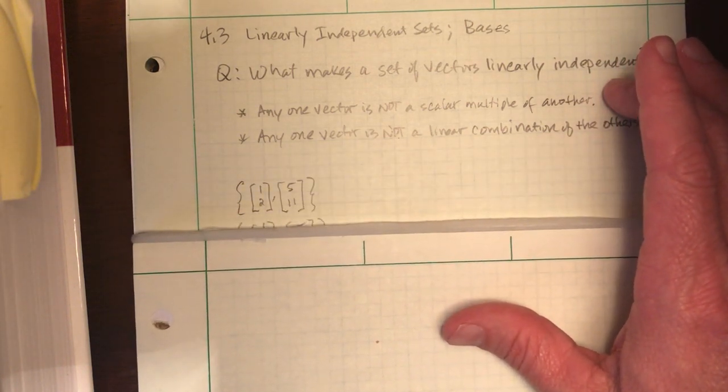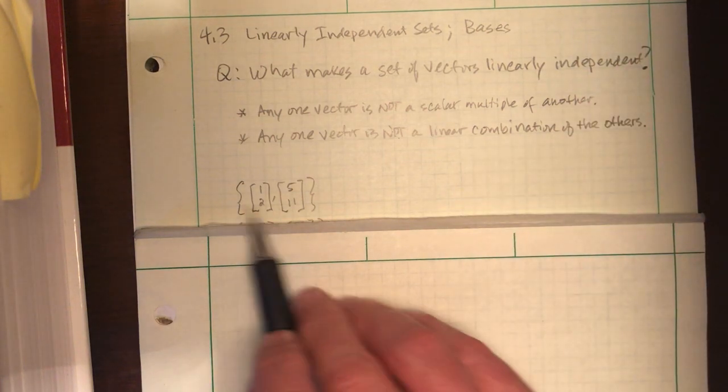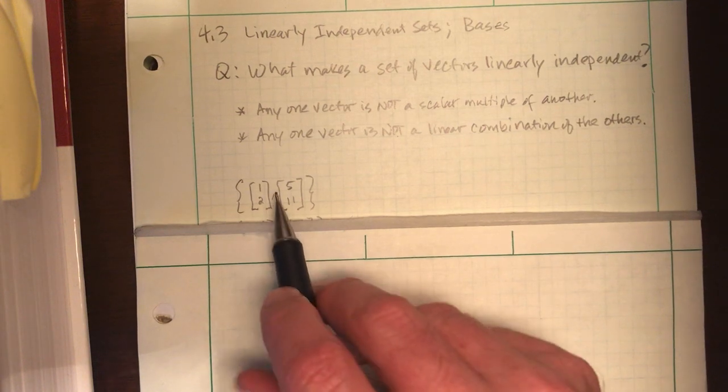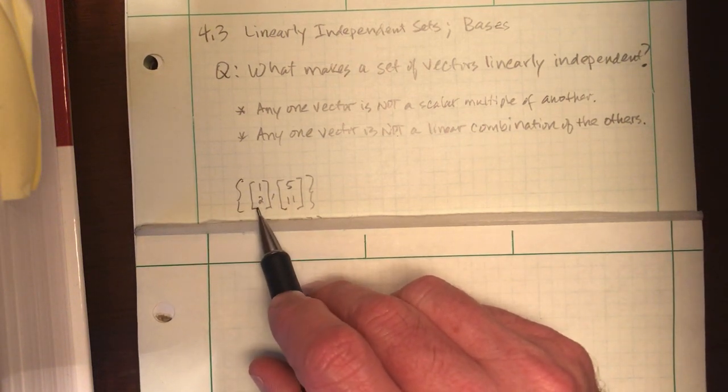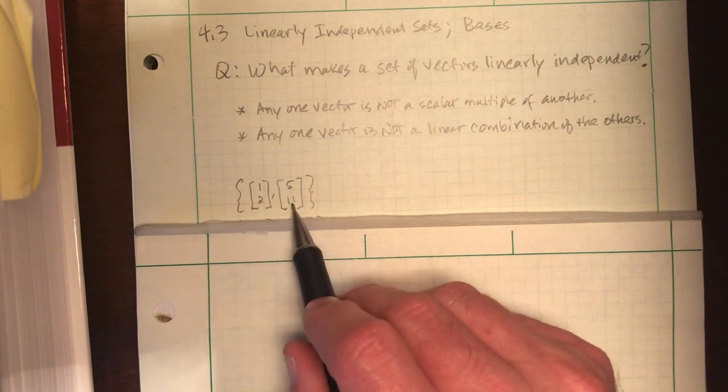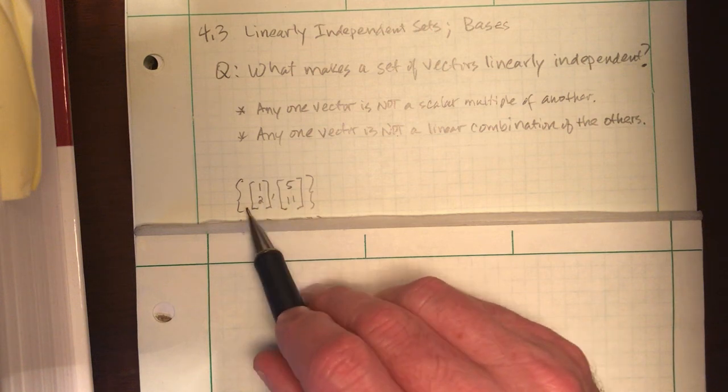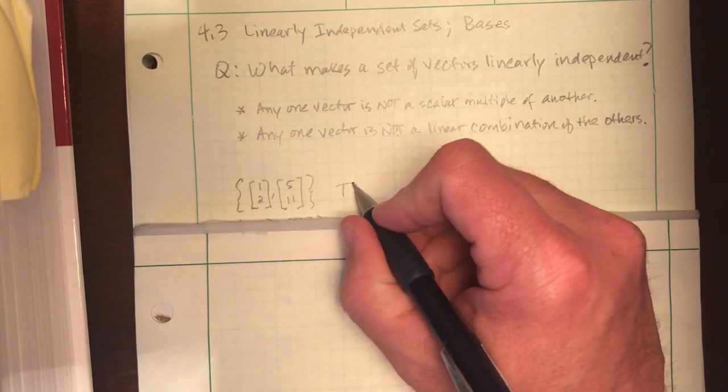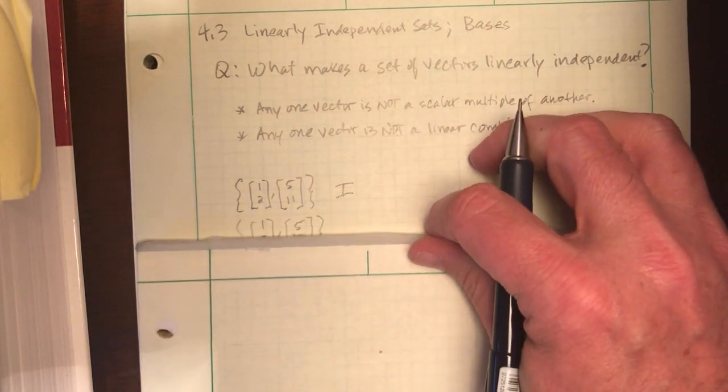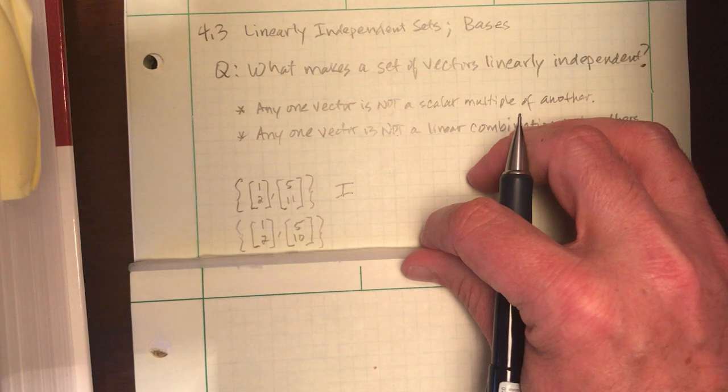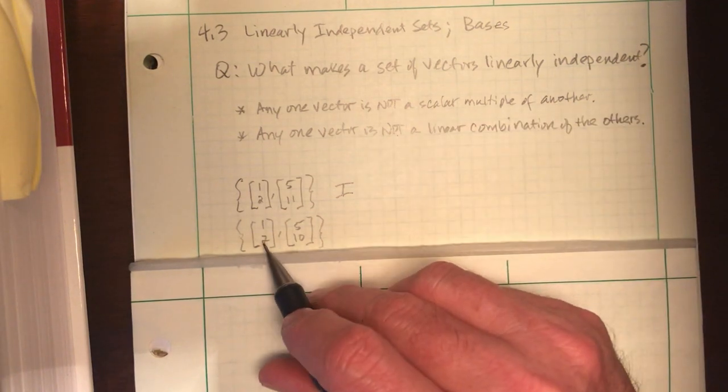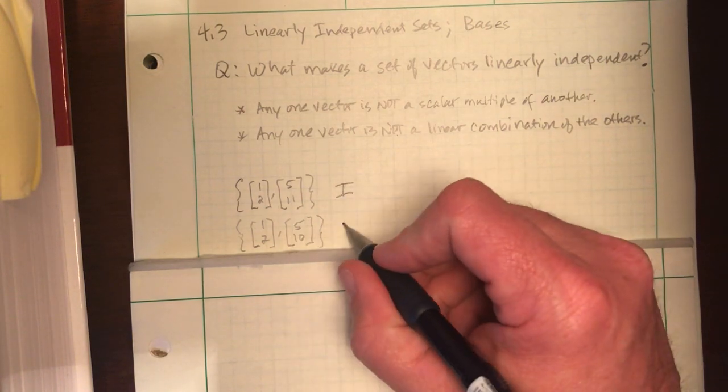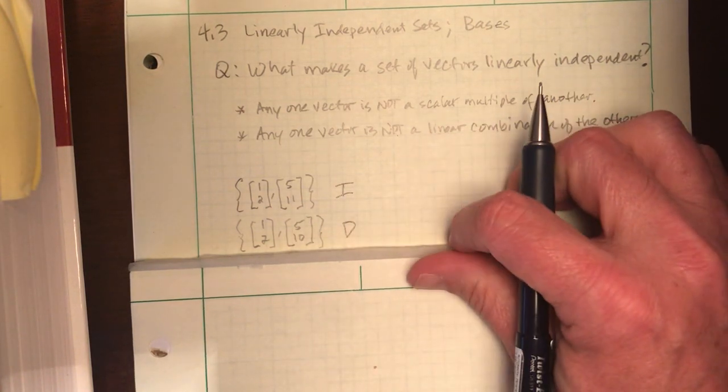So I've got a set of two vectors in R2, and we can check by inspection. Clearly, if I multiply the first one by 5, I get 5 but I don't get 11. So since one is not a scalar multiple of the other, this qualifies as independent. So check out this guy. Clearly, the first one scaled by 5 to give me 5 and 10. This gives us a dependent set.